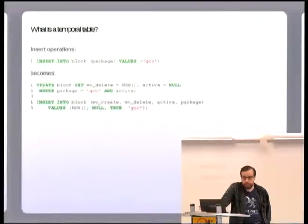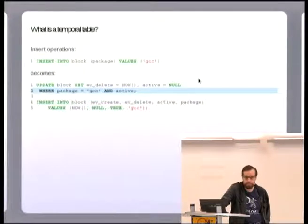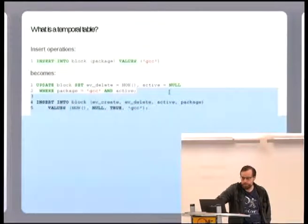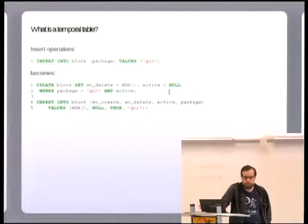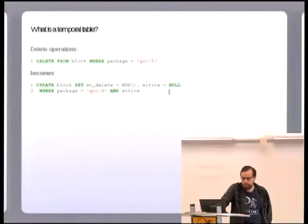Okay, so queries on that become a little bit more complicated but not a whole heap. So if you want to insert something into a temporal table, you have to make sure that the old version is obsoleted if there was one, and then you're just inserting one. So if there was an old active version of gcc, then we set it no longer active and mark the time that we deleted it, and then we can just insert the new one. That's a fairly simple formula that you can just basically pattern match to whatever your old insert clause was.